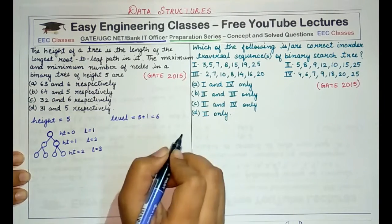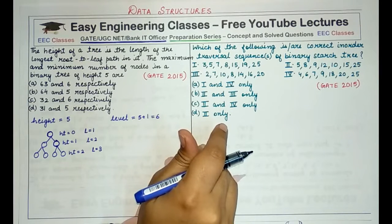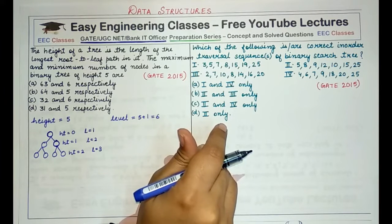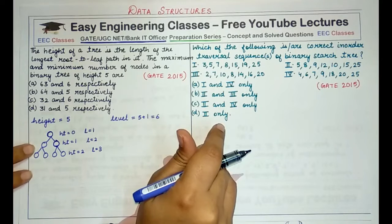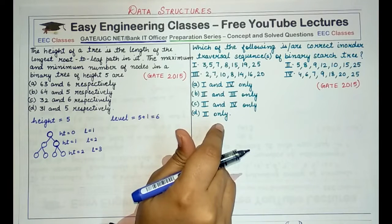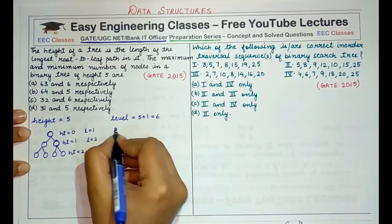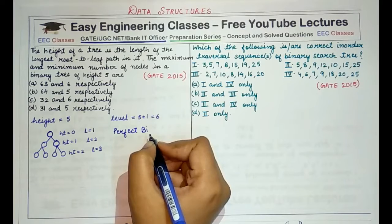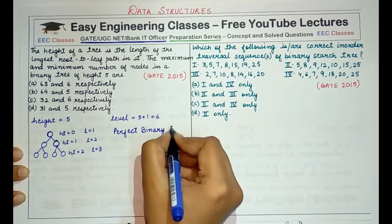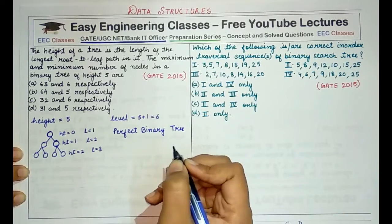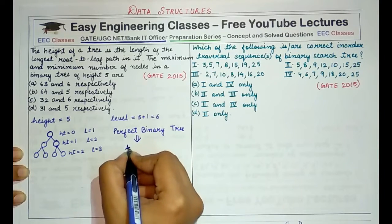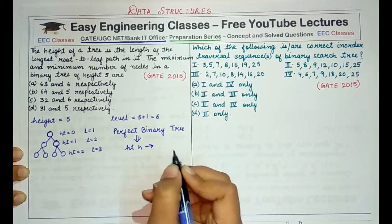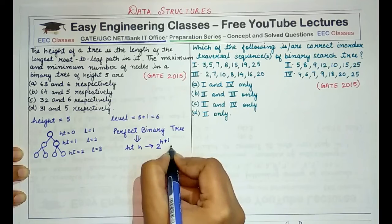Whenever you have to find the maximum number of nodes, you need to completely fill the tree — that means each node should have the maximum possible number of children. Since it is a binary tree, each node can have a maximum of 2 children, and when every node has 2 children we call it a perfect binary tree. In a perfect binary tree we would have the maximum number of nodes possible for any binary tree of a given height.